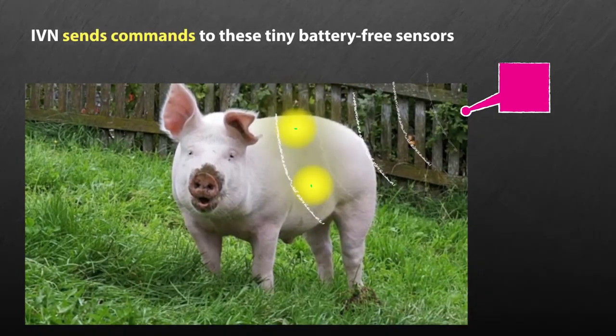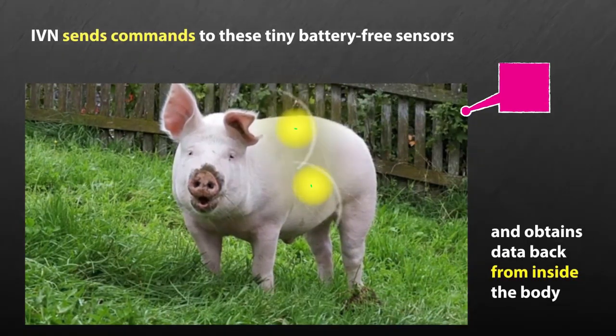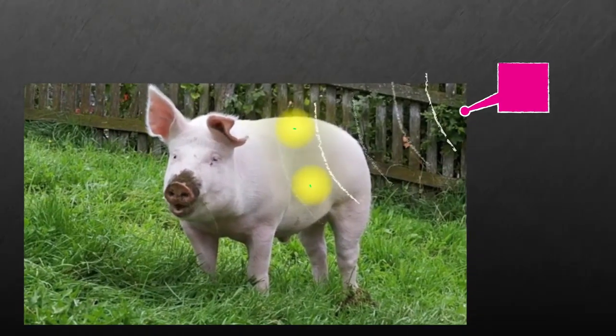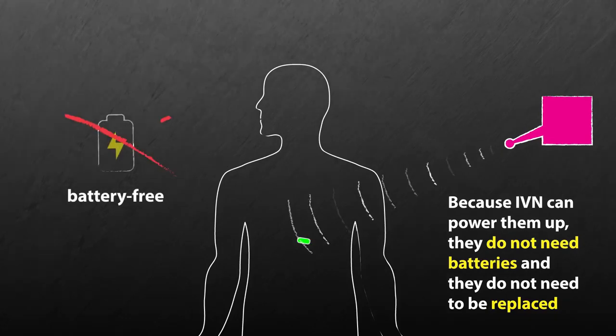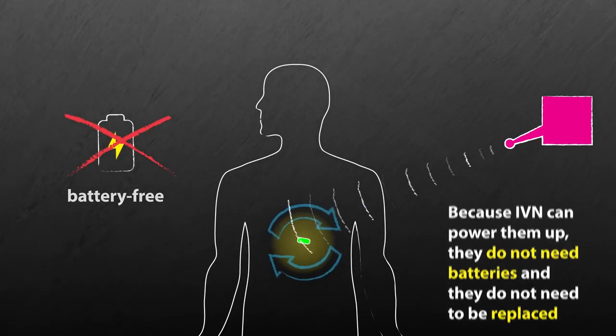IVN sends commands to these tiny battery-free sensors and obtains data back from them from inside the body. And because IVN can power them up, they do not need batteries and they do not need to be replaced.